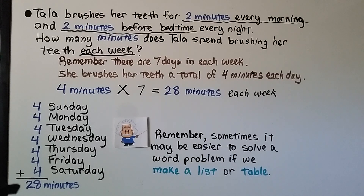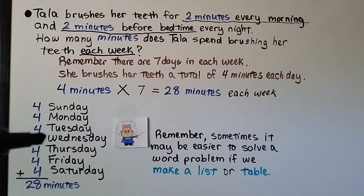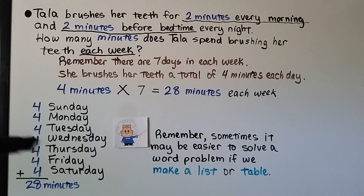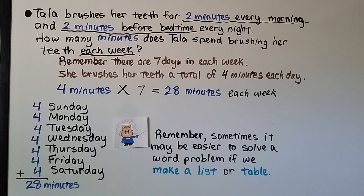Sometimes it may be easier to solve a word problem by making a list or a table. For example, if we know she does 28 minutes a week but the problem asked how many minutes she brushed by Wednesday night, we would count 4 days — that would be 16 minutes by Wednesday night. Making a list or table can be a helpful strategy.